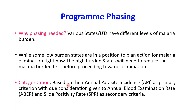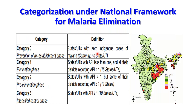The categorization of states was done on the basis of annual parasite incidence as the primary criteria, with due consideration given to the annual blood examination rate and slide positivity rate as secondary criteria. Category 3 included states and union territories which showed an annual parasite incidence of one or more, and ten states fell under this category requiring intensified control.